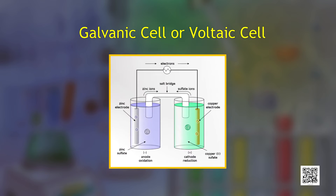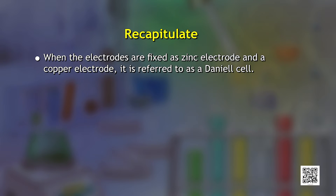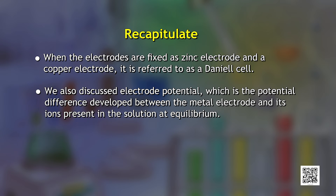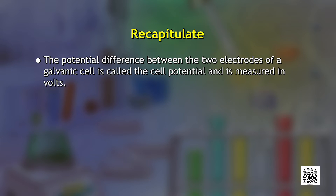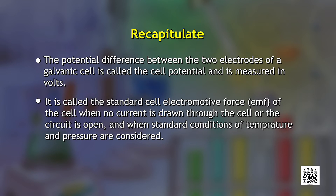From the previous discussion on electrochemical cells, we know a galvanic cell is also referred to as a Voltaic cell. The electrodes are fixed as zinc electrode and a copper electrode — it is referred to as a Daniell cell. We also discussed electrode potential, which is the potential difference developed between the metal electrode and its ions present in the solution at equilibrium. The potential difference between the two electrodes of a galvanic cell is called the cell potential and is measured in volts. It is called the standard cell electromotive force of the cell when no current is drawn through the cell or the circuit is open and when standard conditions of temperature and pressure are considered. According to IUPAC convention, standard reduction potentials are now called standard electrode potential.